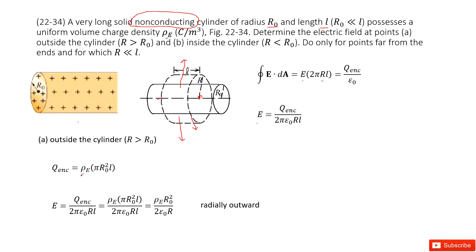That is the charge density times the volume. Times the volume, that is cross-sectional area π R₀ squared, so π R₀ squared times the length. This one times the length, so this region.